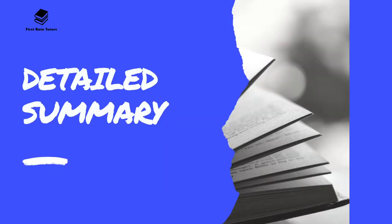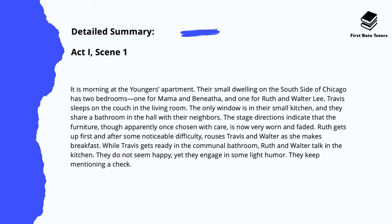In Act 1, Scene 1, it's morning at the Younger's apartment. They live in a small dwelling on the south side of Chicago, which has two bedrooms — one for Mama and Benita, and one for Ruth and Walter Lee. Travis sleeps on the couch in the living room. The only window is a small kitchen, and they share a bathroom in the hall with the neighbours. The stage directions indicate that the furniture, though apparently once chosen with care, is now worn and faded.